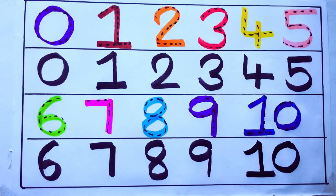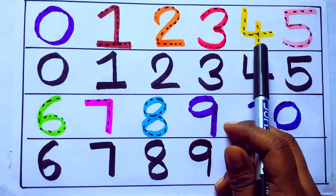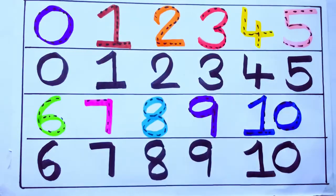Let's review the numbers. 0, 1, 2, 3, 4, 5, 6, 7, 8, 9, 10. Okay, bye kids.